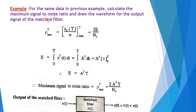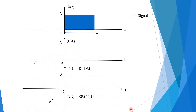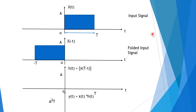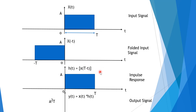We are asked to calculate the maximum SNR and draw the waveform of the output signal of the match filter. The output Y(T) is the convolution of H(T) and X(T). Using the same input signal x(T) with amplitude A, we determine x(−T) (the folded signal) and H(T) = x(T − T), giving us the output waveform Y(T) = x(T) convolved with H(T).